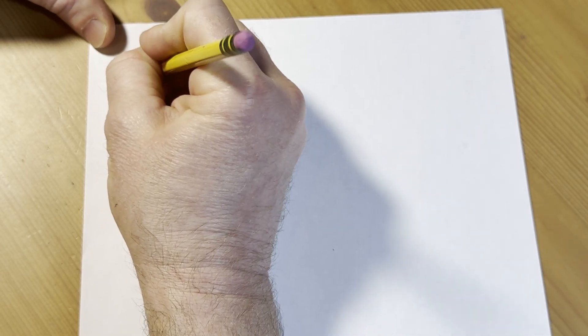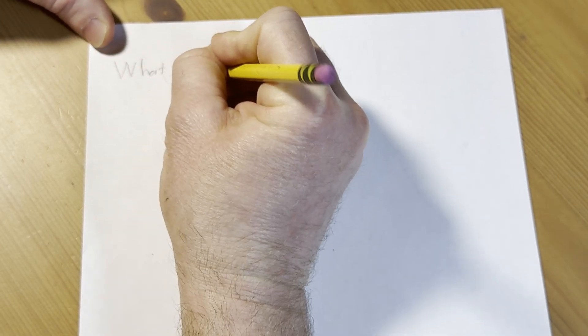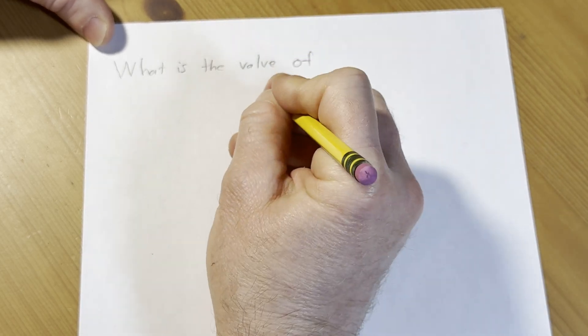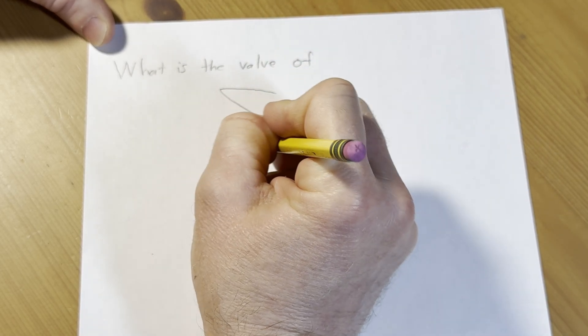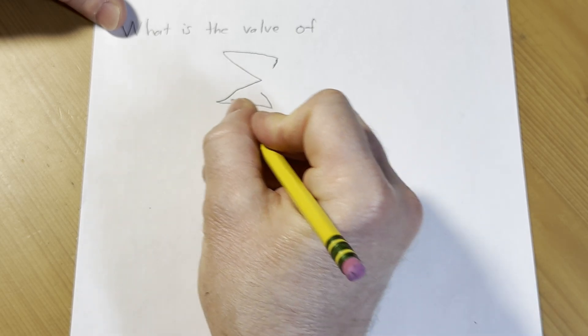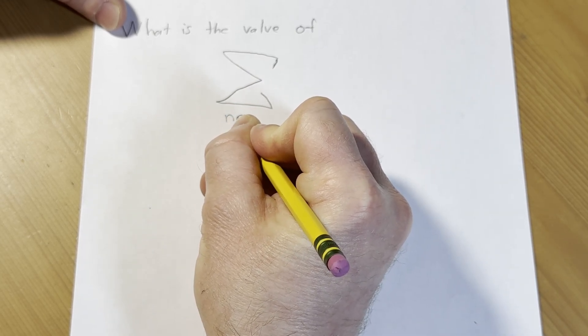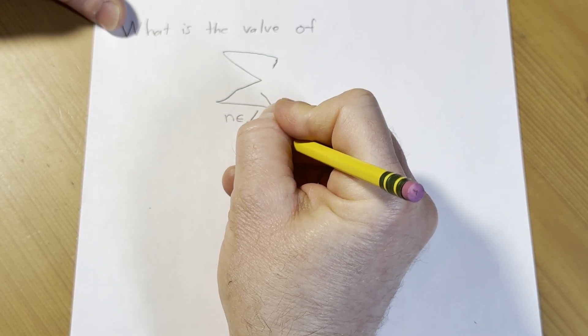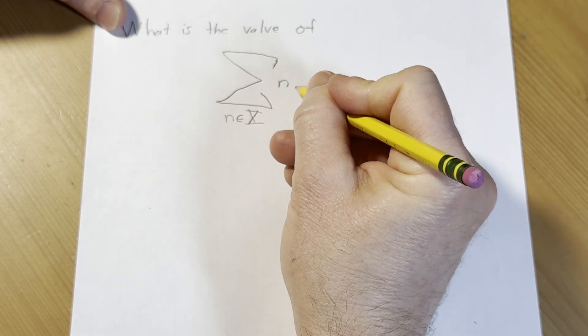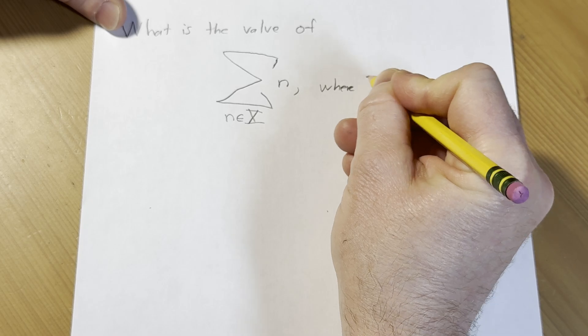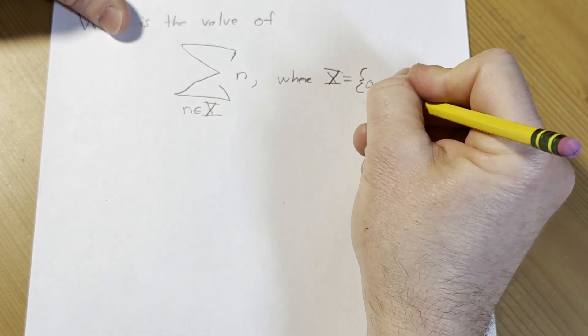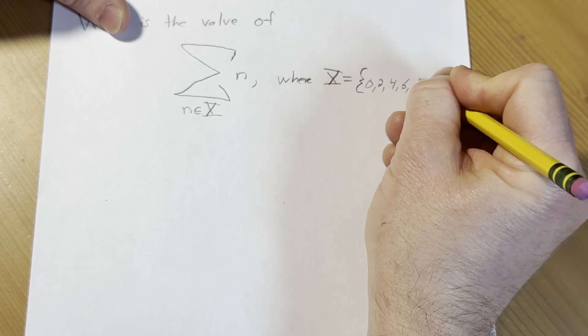So the question will say, what is the value of this sum here. The sum is going to run over the values of n, where n is in the set capital X, where X is the following set: 0, 2, 4, 6, 8.